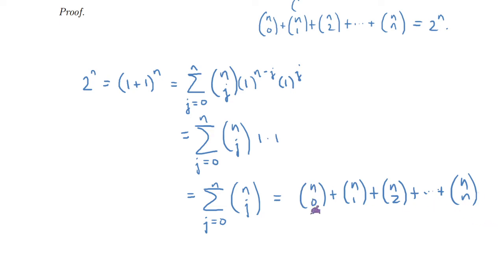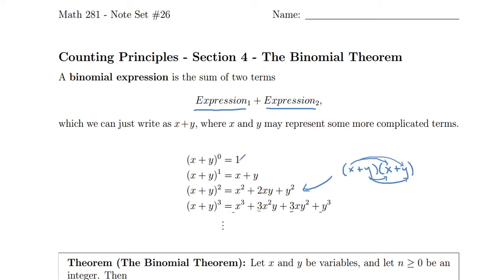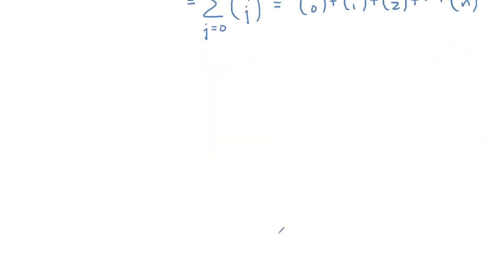That's kind of interesting — if you sum the coefficients in a basic expansion, you get two to the n. Going back to the earlier expansions: for n equals zero, we have one, which is two to the zero. For n equals one, we have one plus one equals two, which is two to the first. For n equals two, we have one plus two plus one equals four, which is two squared. For n equals three, we have one plus three plus three plus one equals eight, which is two cubed. So that property holds, and it'll be visible in Pascal's triangle as well.